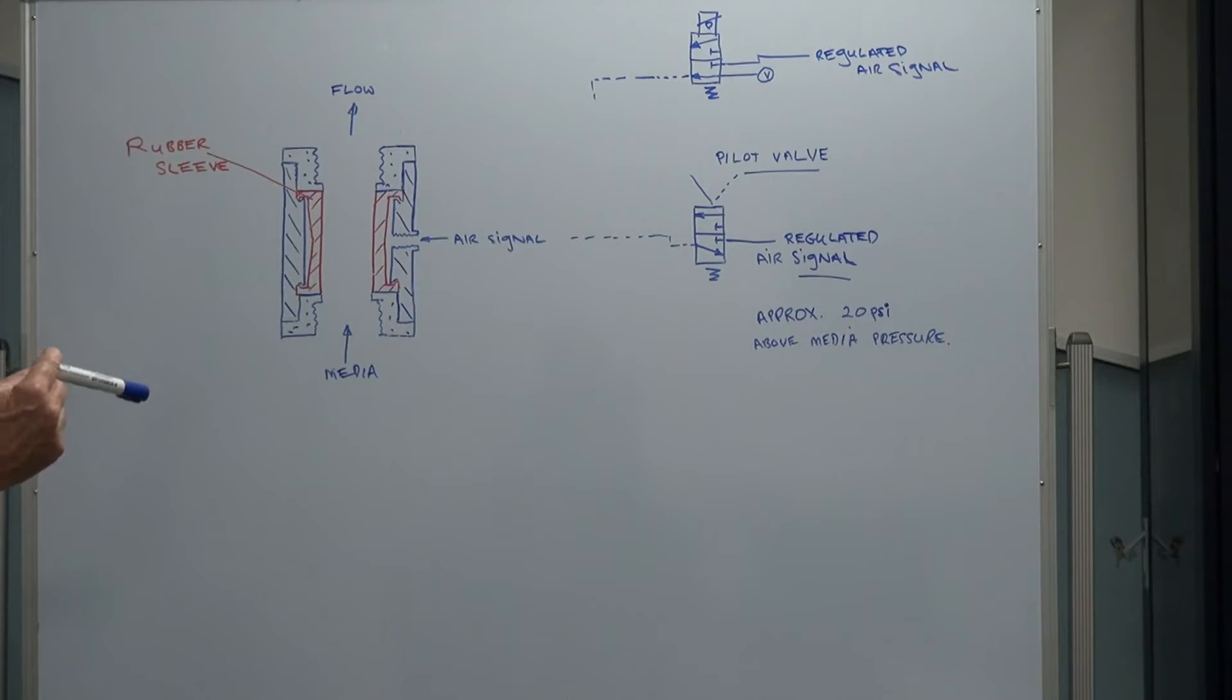Our valves go from quarter inch to two inch BSP, so they're really ideal for sampling of slurries in the mining industry, in food processing possibly if we have food grade sleeves, and plastics industries.